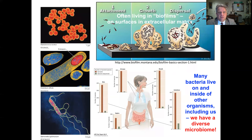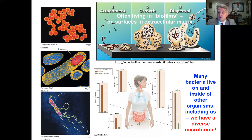Bacteria are really diverse and form an important basis for a lot of ecosystems. Really interesting research that emerged in the latter part of the 20th century is the idea of biofilms, where bacteria are living on surfaces in extracellular matrices. These biofilms can contain multiple species of bacteria. Also really interesting is the concept of the microbiome — the diversity and community of bacteria that live on or inside other things. Essentially all animals, including humans, have an important and very diverse microbiome.